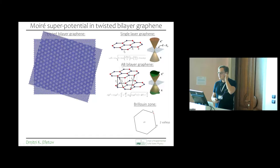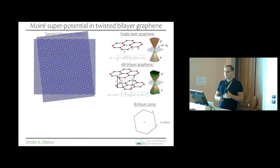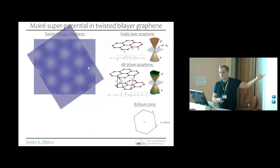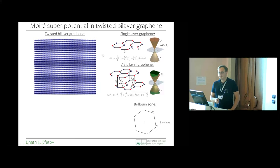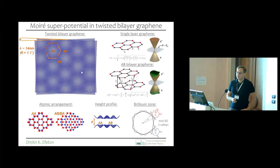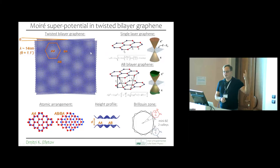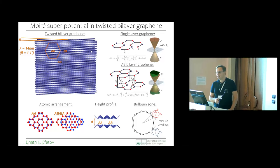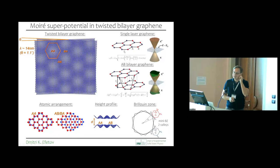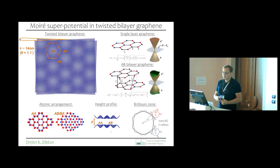With twisted bilayer graphene we mess this picture up completely by rotating the graphene sheets on top of one another, creating this moiré superpotential. For the magic angle of interest — 1.1 degrees — the lattice constant is 14 nanometers, and if you count the atoms per moiré unit cell you find something like 10,000 to 12,000 carbon atoms. It's a huge unit cell, and in the beginning it was challenging for theorists to calculate with such a large number of atoms.